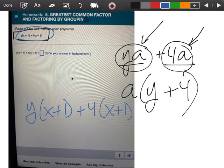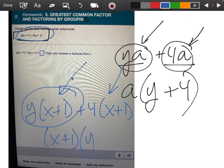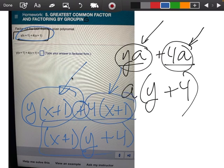So again, I'm going to do the same thing. I'm going to say, hey look, you know what they both have? They both have an (x+1). So if I take the (x+1) from here, I'm left with a y plus, because there's a plus in the middle. If I take the (x+1) from here, I'm left with a four, and this is my final answer.